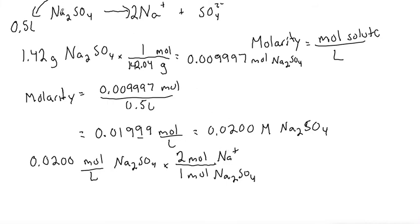Because when each Na2SO4 dissociates, it creates two ions of the Na+. So that's where this two comes from, and multiplying that out gives us 0.0400 moles per liter of Na+.